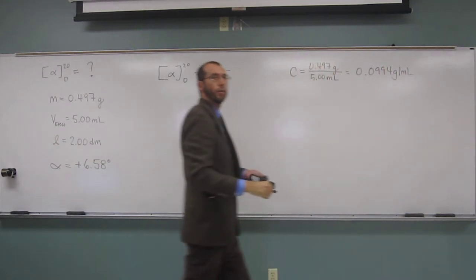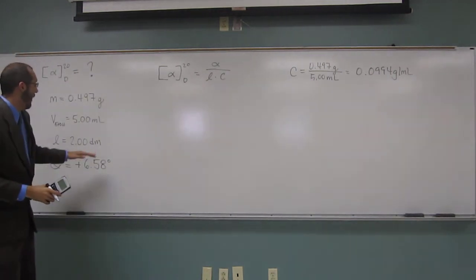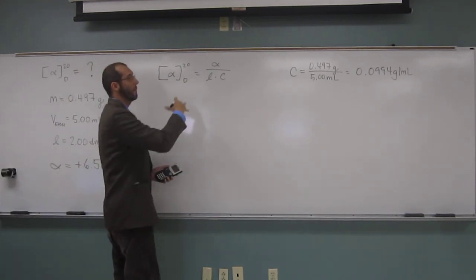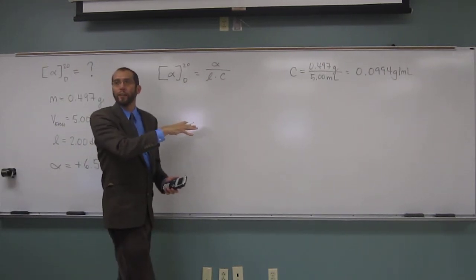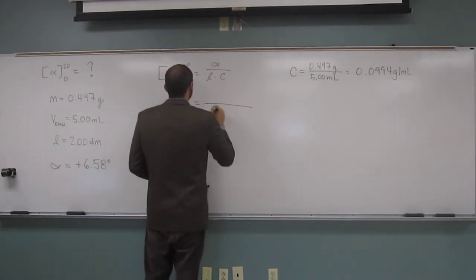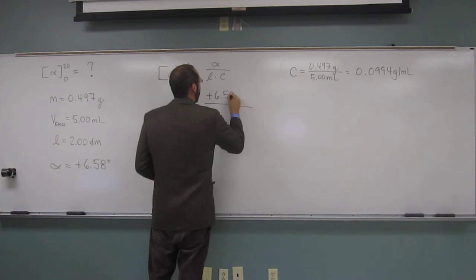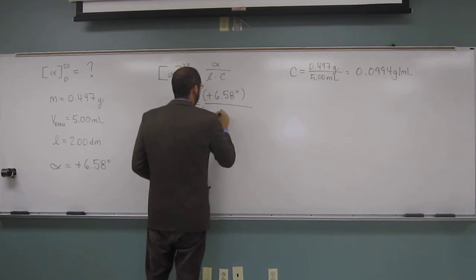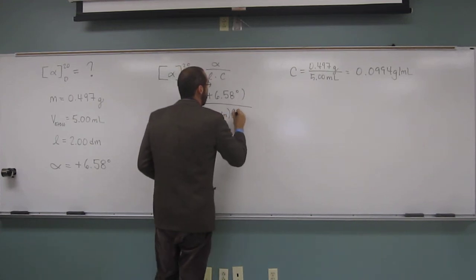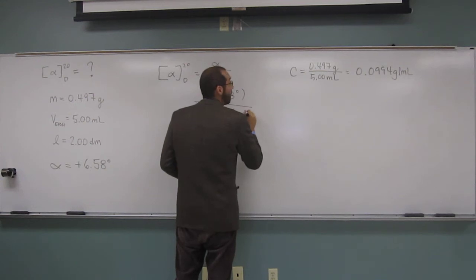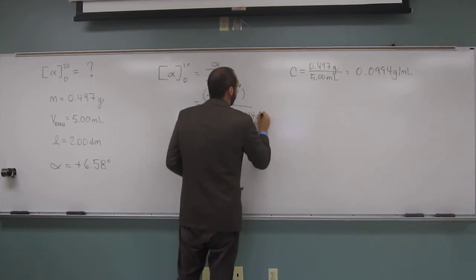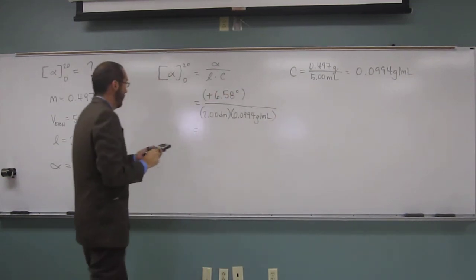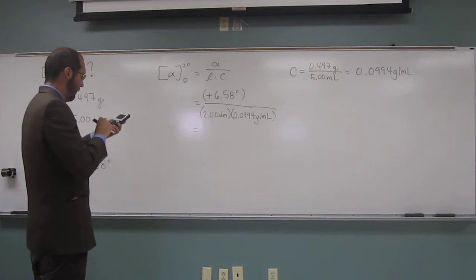And remember, we want concentration values of grams per mil, we want pathlengths of decimeters, so we've got that. And we've got our observed, so we should just be able to plug and chug now. All right? Yes. Okay, wonderful. So, plus 6.58 degrees. Okay, so times 0.0994 grams per mil. Okay? So times 2.00.